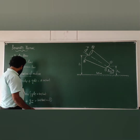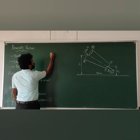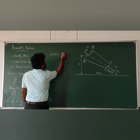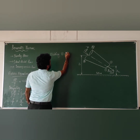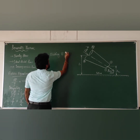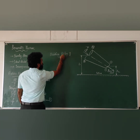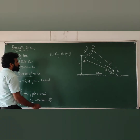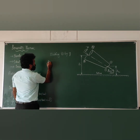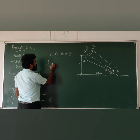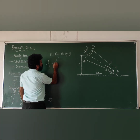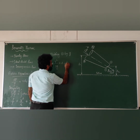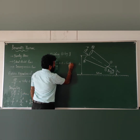Euler's equation 1, dividing throughout by g: p divided by rho·g, plus v squared by 2g, plus z, is equal to constant.